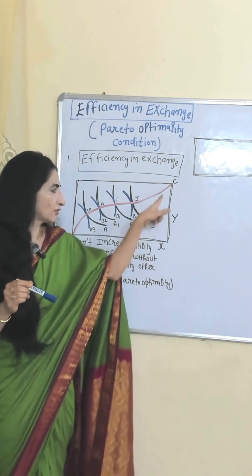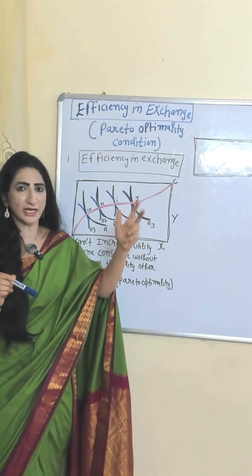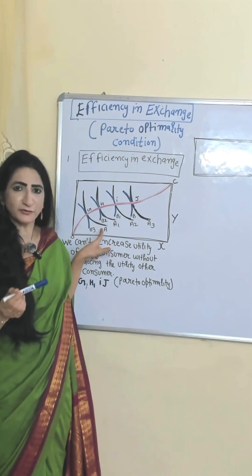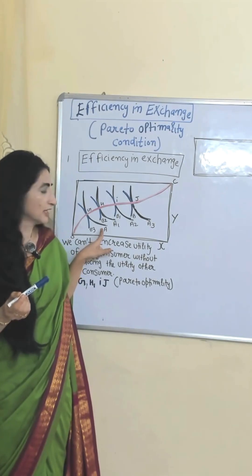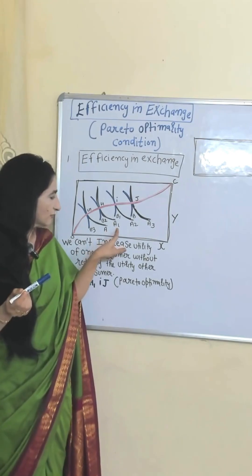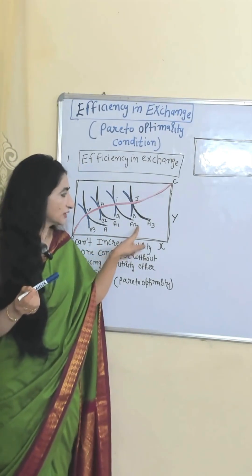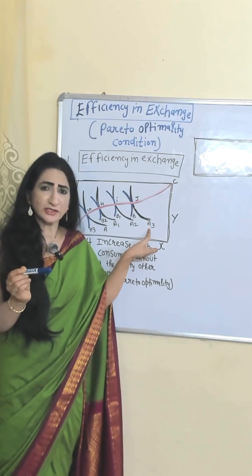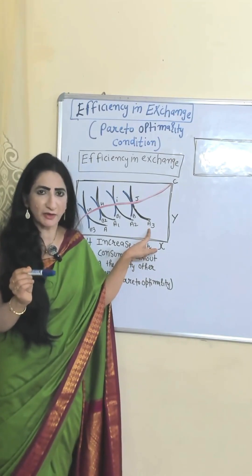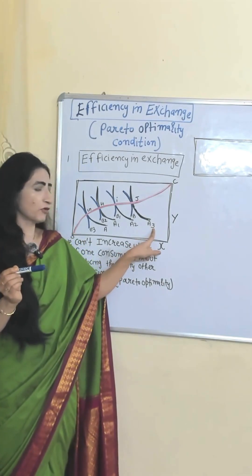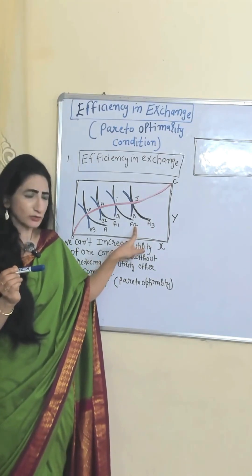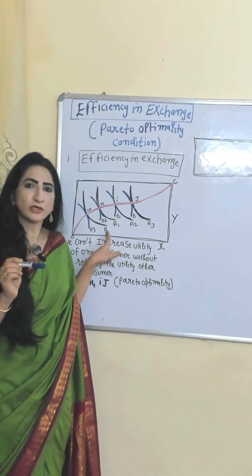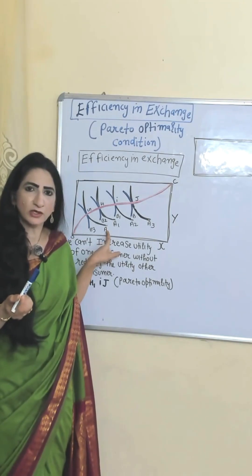The horizontal side shows X good and the vertical side shows Y good. We have two consumers, A and B. The indifference curves of A start from here — the black ones belong to A. As A moves from A to A1, A1 to A2, A2 to A3, his utility increases because a higher indifference curve gives higher utility. But if A moves back from A3 to A2, A2 to A1, A1 to A, his utility falls because a lower indifference curve gives lower utility.